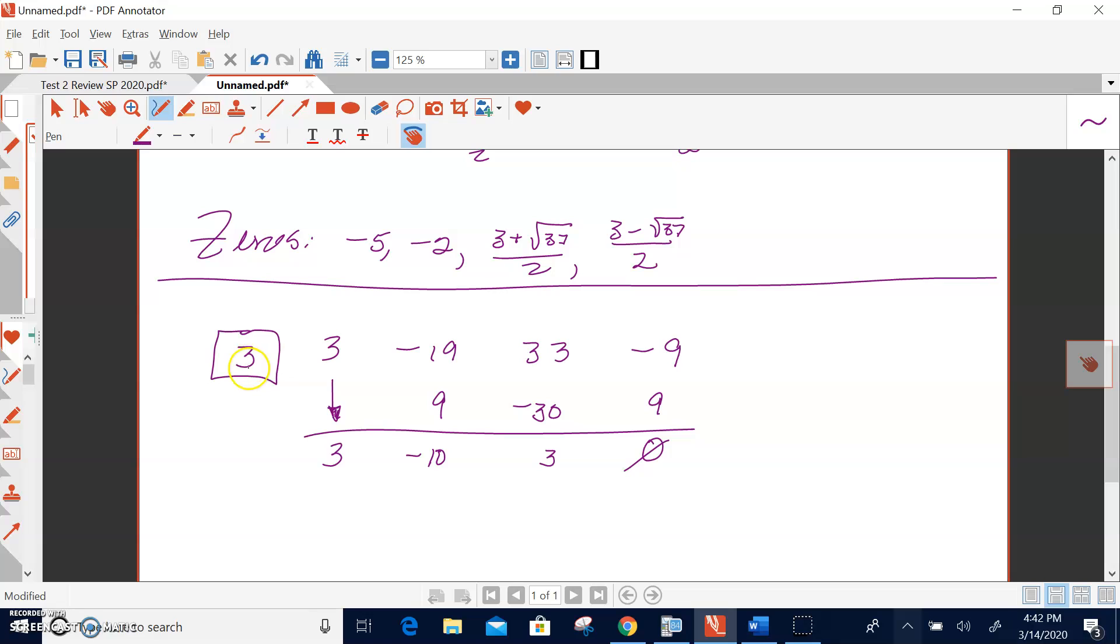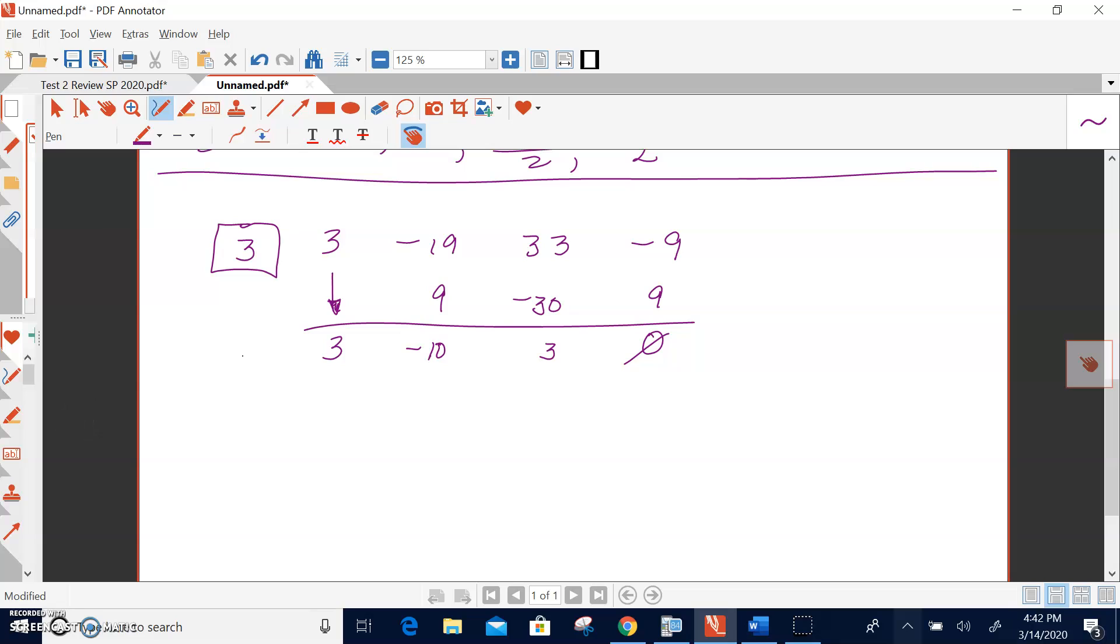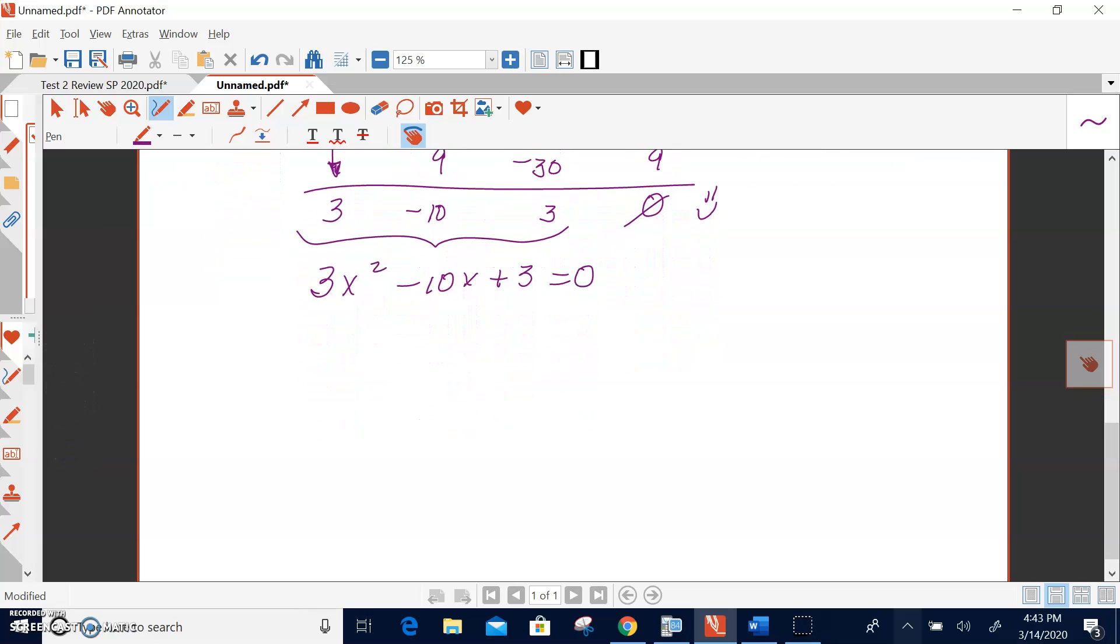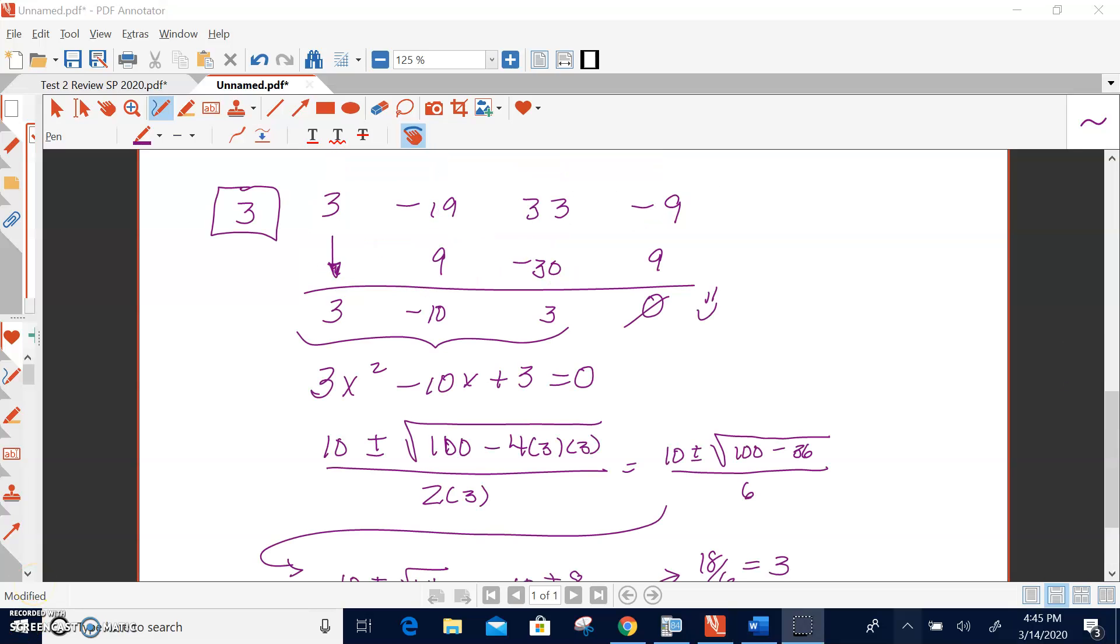So let's do some synthetic division so we can get our quadratic. So we're going to divide, take that polynomial, divide them by 3, because that was the 0 from our calculator. Doing the synthetic division, we get a remainder of 0. We knew that was going to happen. And voila, we have our quadratic. 3x squared minus 10x plus 3. Now, to finish this off, we're going to have to use the quadratic formula.